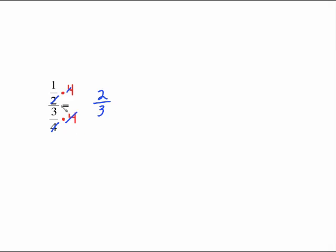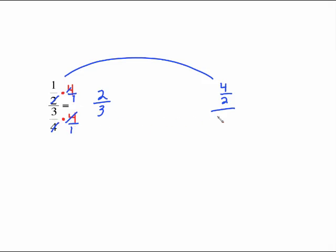That was a very easy example because it was just numerical. Another option, if you don't want to cancel, is to think of 4 as 4 over 1. This gives 4/2 on top and 4 times 3 = 12 over 4 on the bottom. Then 4 divided by 2 is 2, and 12 divided by 4 is 3. I think canceling is a little easier, but sometimes you'll want this approach, especially with polynomial examples.